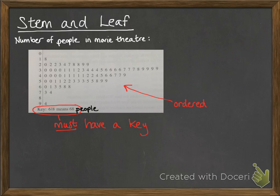Strictly speaking, that should really say that six by eight means sixty-eight people. We should put the units on there as well. That was missed off of this example that I copied down for you.